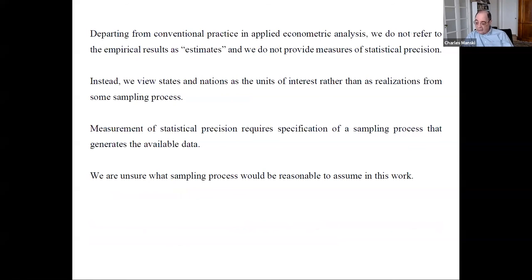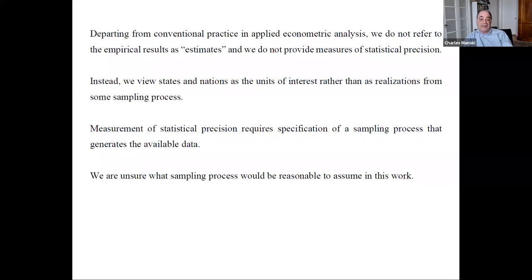A note for econometricians and statisticians: when we give these numbers, we don't call them estimates and we don't provide measures of statistical precision like standard errors or confidence intervals. The reason is that measuring statistical precision requires a well-defined sampling process generating the data. These are population data — we have full data for Illinois, New York, and Italy — so there's no obvious sampling process, and we stay away from that.